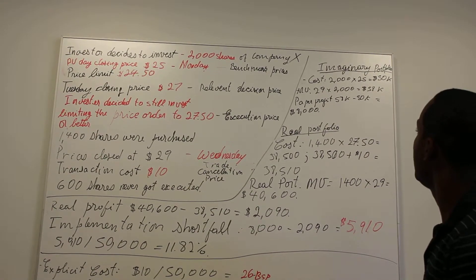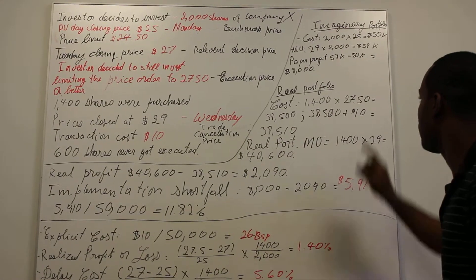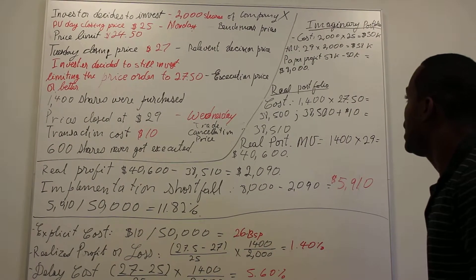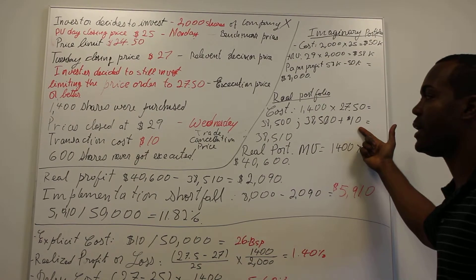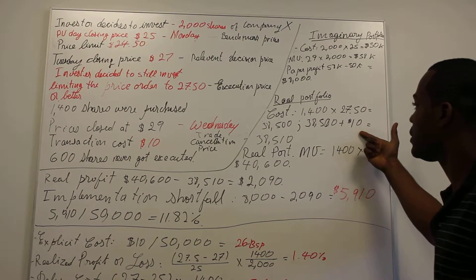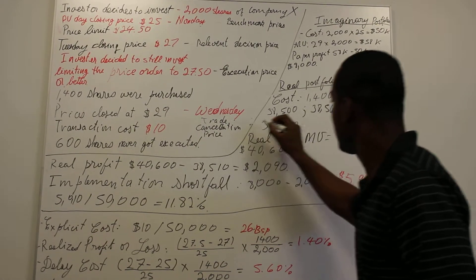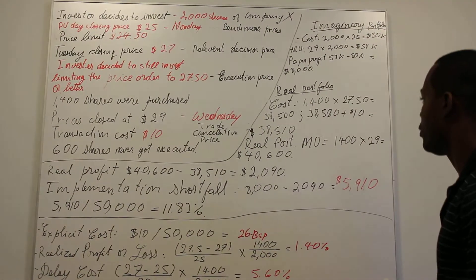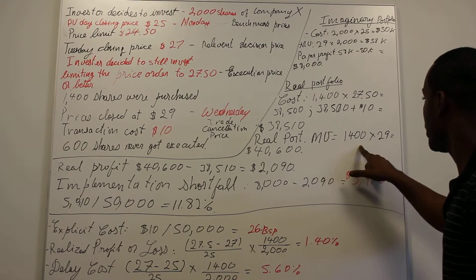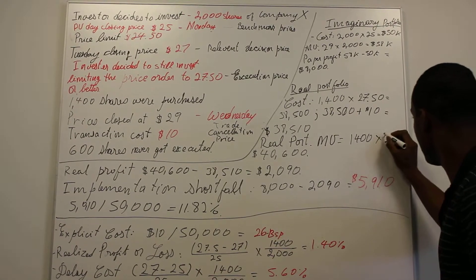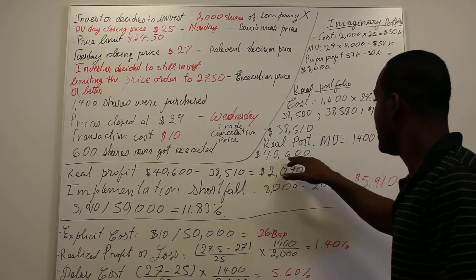For the real portfolio, the investor actually purchased 1,400 shares at $27.05, costing $37,870 — plus he paid $10 in explicit brokerage commission fees — for a total portfolio cost of $38,510. The real portfolio's market value on Wednesday night is 1,400 shares times $29, giving a total market value of $40,600.